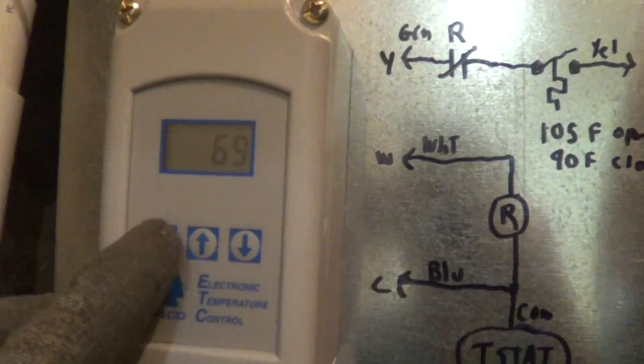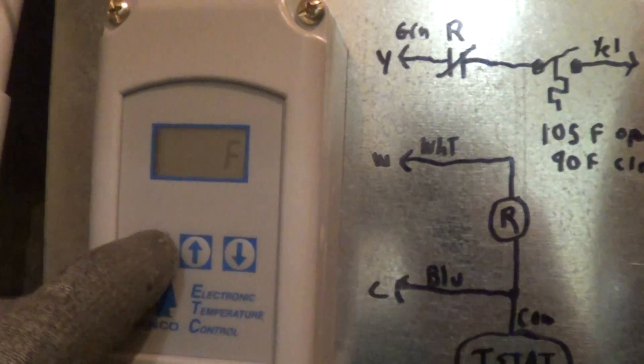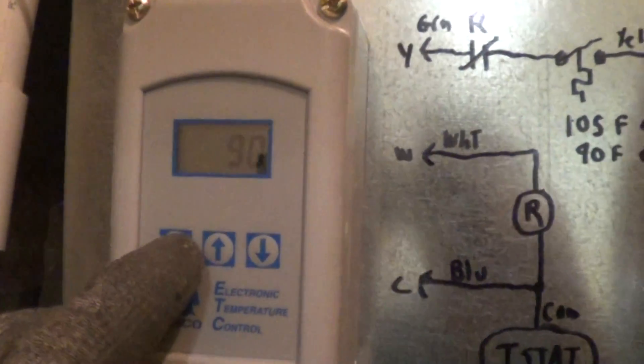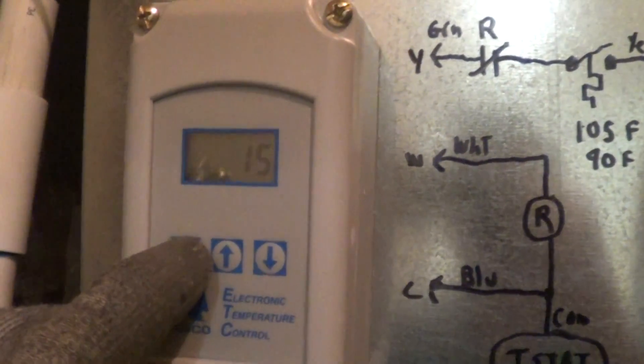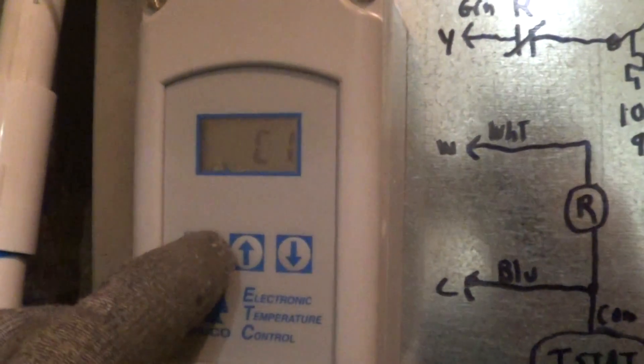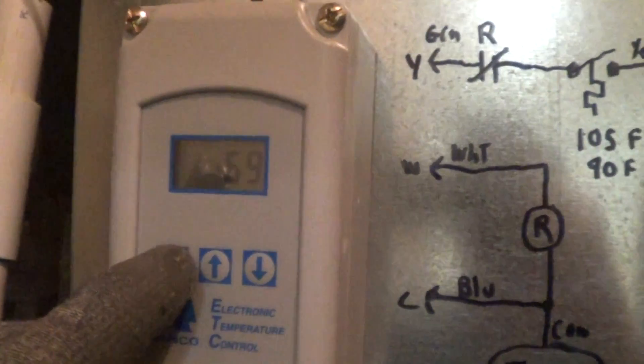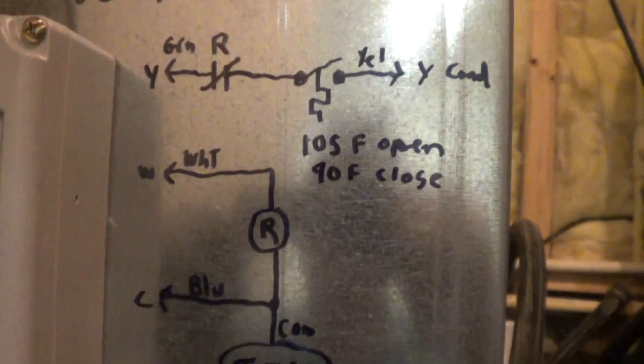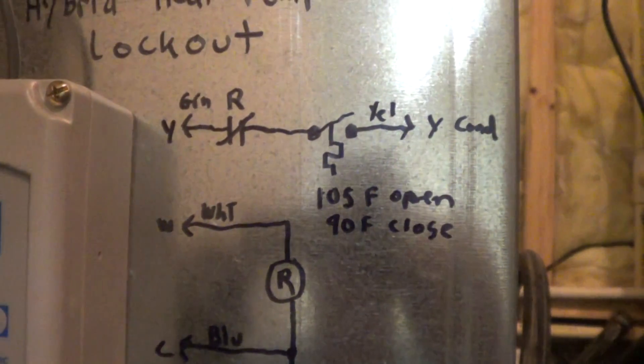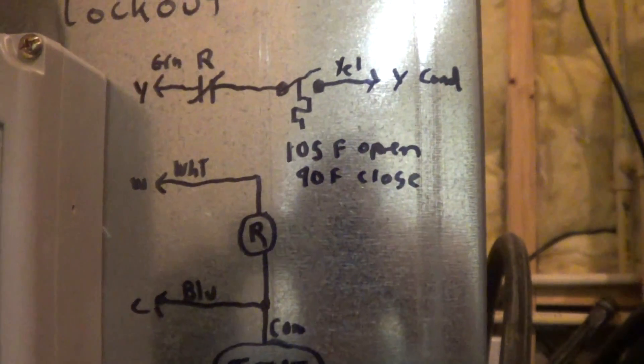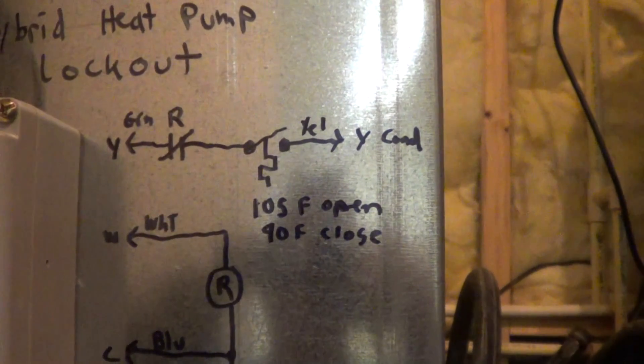Wanted to show the thermostat setup here. Fahrenheit, 90 degrees, 15 degree differential. It's on cooling. That's it. That's the setup. And that gives you your 90 degree close, 105 degree open.